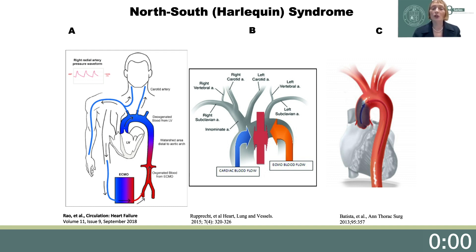Understanding circuit pressures and flow dynamics will guide the decision as to whether or not you can increase blood flow to accomplish this. If your circuit pressures are within reasonable limits, you may attempt to increase ECMO blood flow. However, if your circuit pressures are at maximum, other strategies will have to be considered for improving coronary and carotid oxygenation — for example, VAV ECMO. Thank you again.